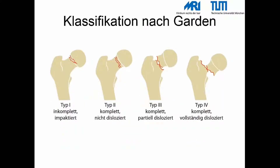Die Garten-Klassifikation berücksichtigt auch die axiale Dislokation. Typ 1 ist komplett impaktiert, Typ 2 ist komplett frakturiert aber nicht disloziert, Typ 3 ist komplett frakturiert und partiell disloziert, und Typ 4 ist vollständig disloziert.